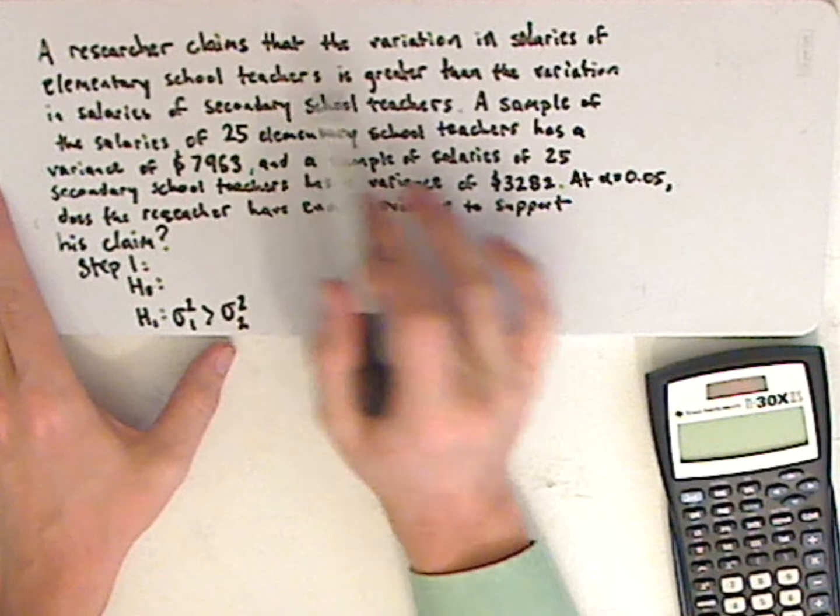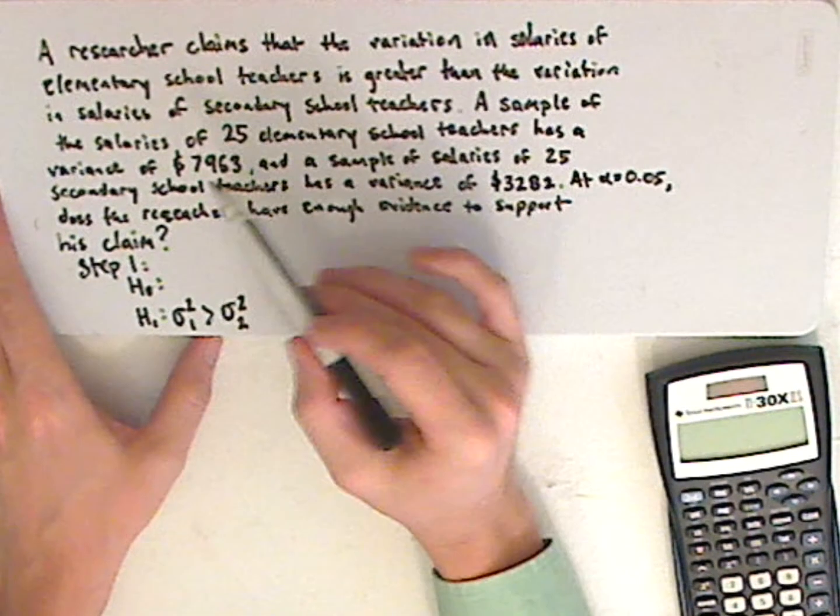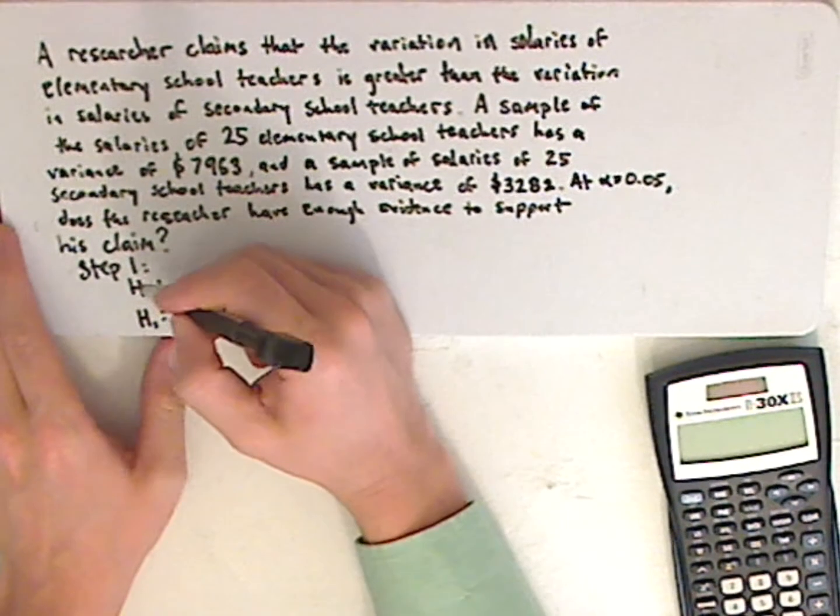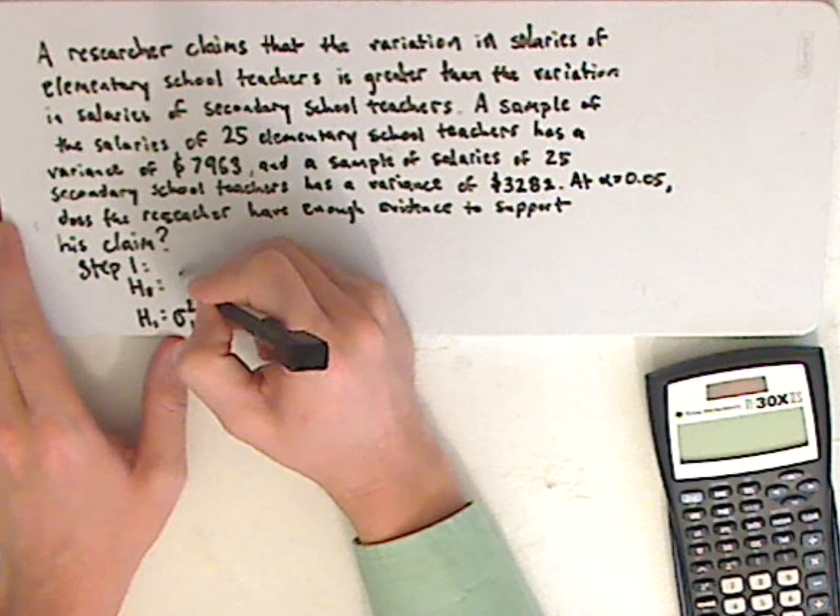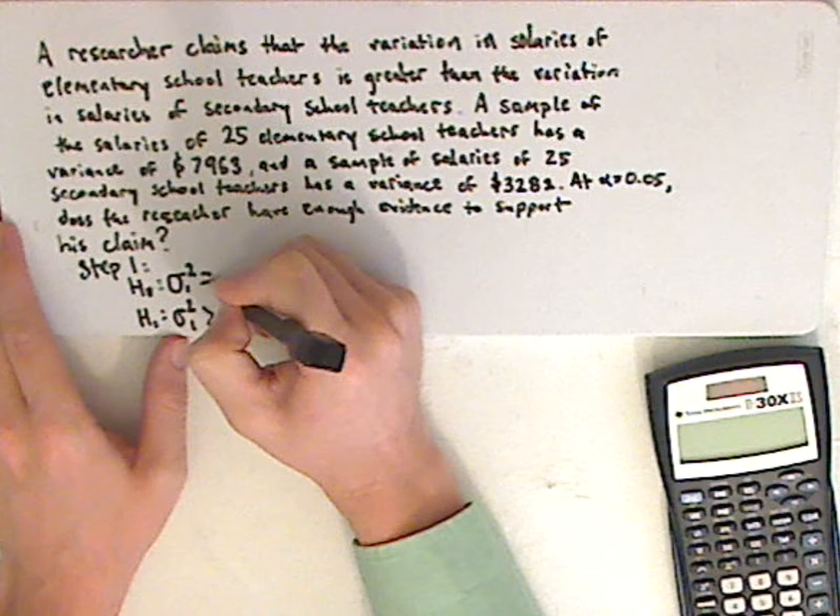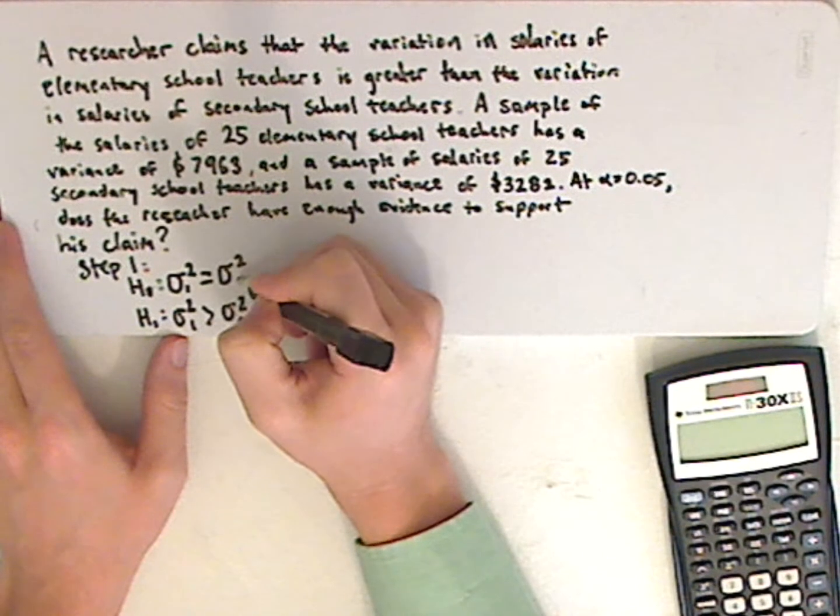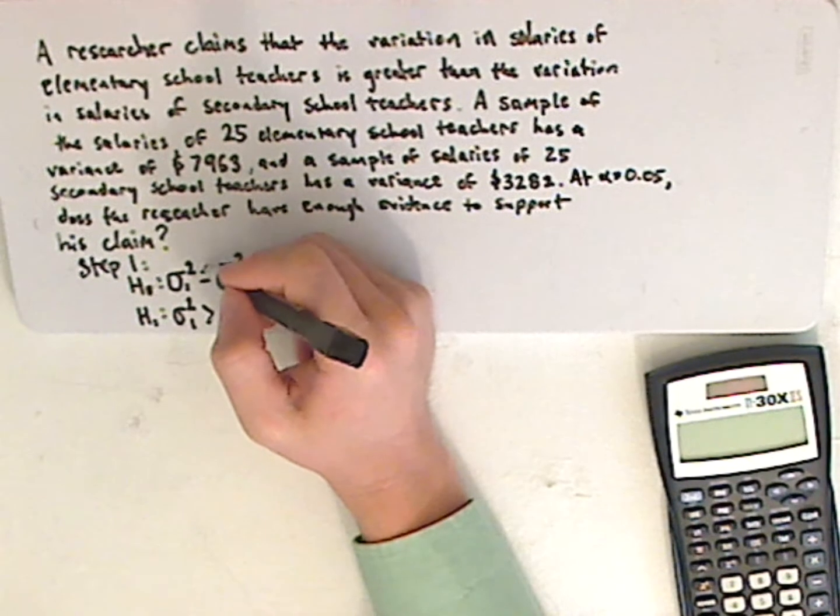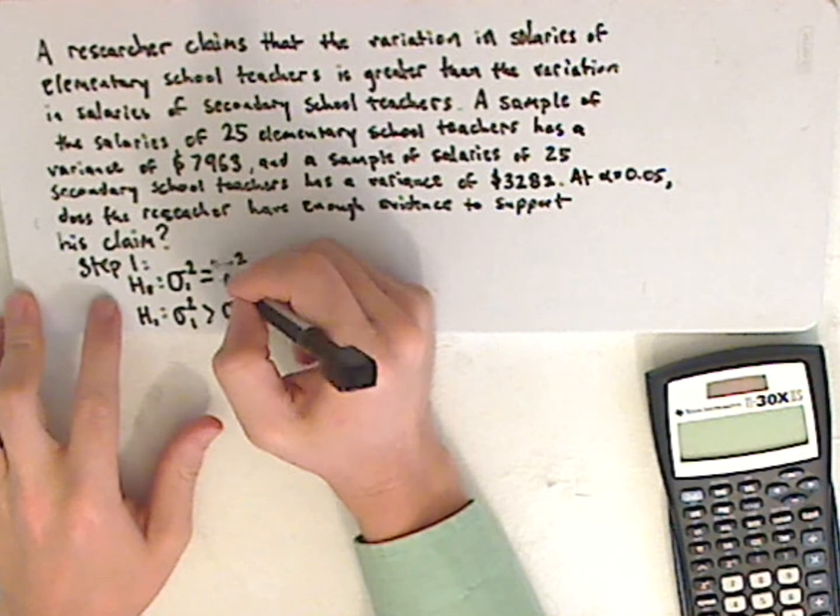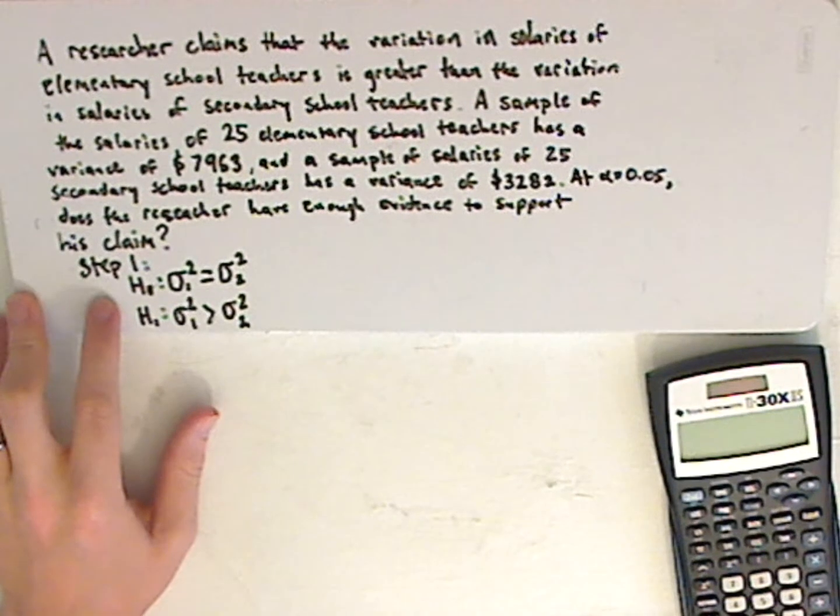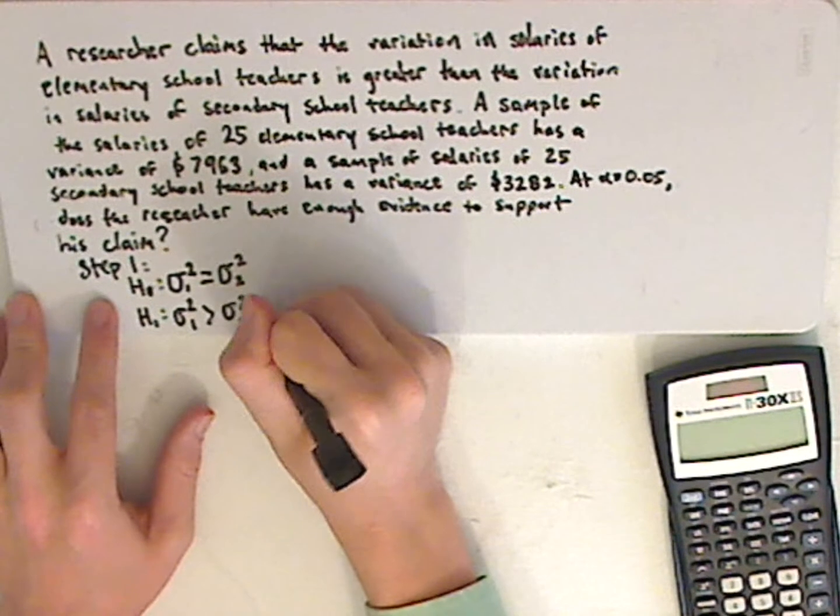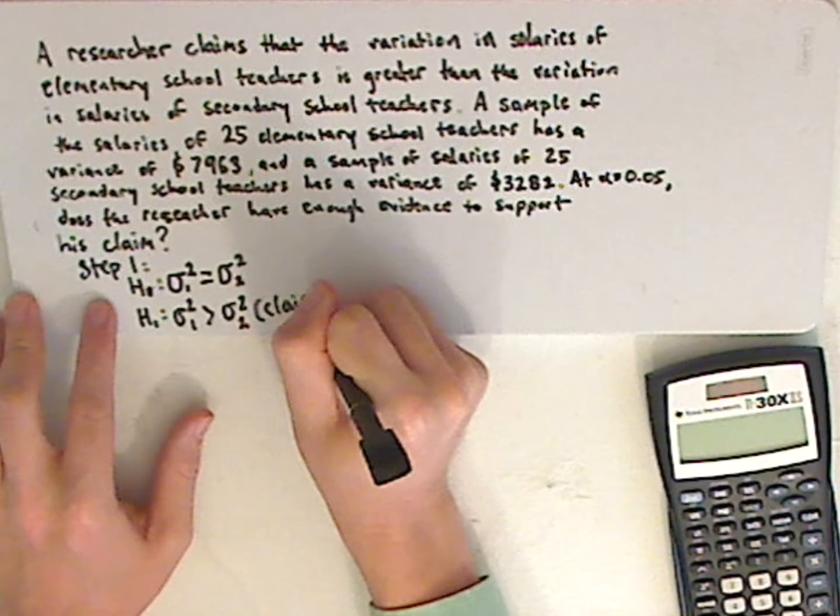Now I'm just listing it in order in the problem. So you have greater than, so elementary school teachers comes first, and then this. And then your null hypothesis is going to involve equals. Now you could very well put less than or greater than. But for most textbooks you're going to see equals. In other textbooks you'll see less than or equal to. So your null hypothesis could either be one of those. And right where the claim is at, claim is right there.